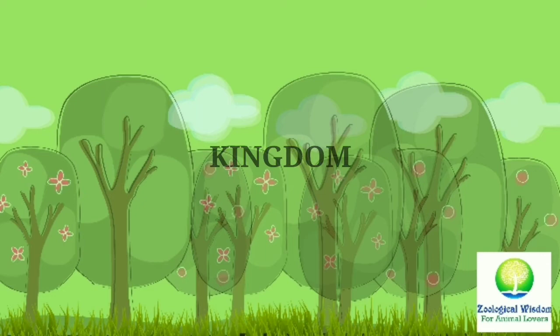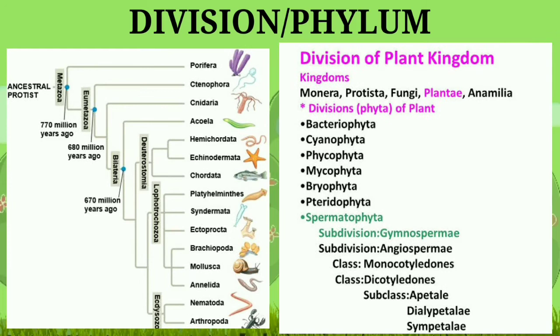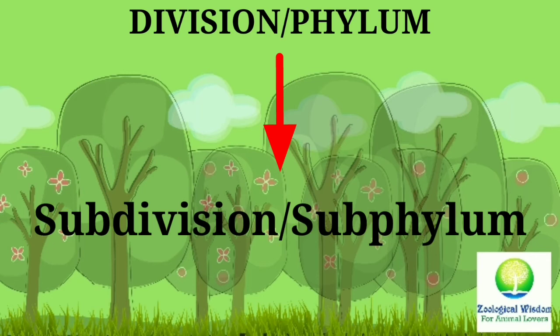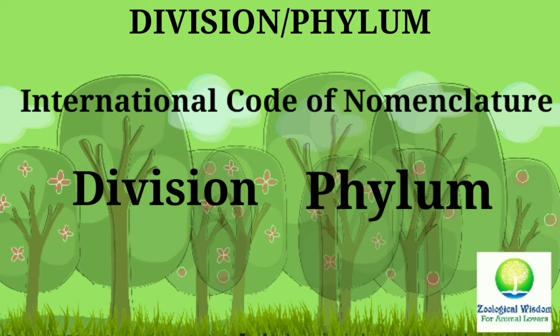Kingdom is the highest category in biological classification. Division or Phylum — George Léopard Cuvier, a French naturalist, added phylum to taxonomy. It is a major group in the taxonomic hierarchy, with subdivision as its subcategory. In botany and microbiology, the word division is used instead of phylum, although the International Code of Nomenclature for algae, fungi, and plants accepts both terms as equivalent.